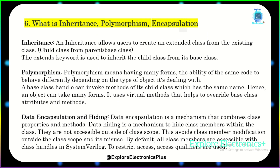What is inheritance, polymorphism, and encapsulation? Inheritance allows a user to create an extended class from an existing class — we can create a child class from the parent class, called the base class. The extends keyword is used to inherit the class from the base class. Polymorphism means having many forms: the ability of code to behave differently depending on the type of object. A base class handle can invoke methods of its child class with the same name, so the object can take many forms. It uses virtual methods to override base class attributes and methods.